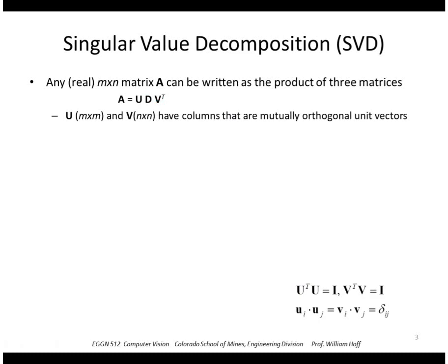U and V are matrices that have columns that are mutually orthogonal unit vectors. Namely, if we take U transpose times U we get the identity matrix, V transpose times V is the identity matrix, or the dot product between any column vector u_i and u_j gives us the Kronecker delta, namely it's 0 if i does not equal j and it's 1 if i equals j.